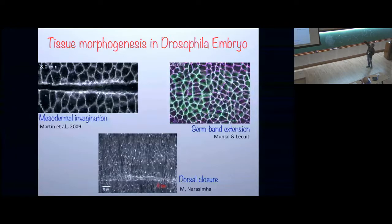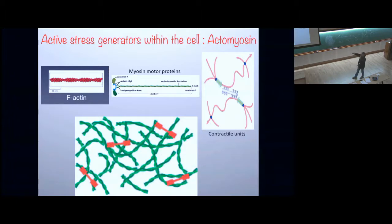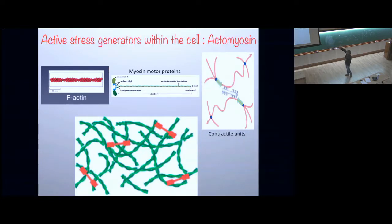The stage we'll be looking at in closer detail is germ band extension. You have a two-dimensional closed surface of cells, and there are objects within each cell which give rise to shape changes and movement. The force generators within each cell are active, primarily consisting of two sets of molecules: actin, which are rigid filaments, and myosin motors, which through the hydrolysis of ATP generate stresses locally. Myosin comes together to form mini-filaments, binds to actin, and upon ATP hydrolysis applies contractile forces, tugging onto the actin filaments. This is the molecular origin of forces in biology.